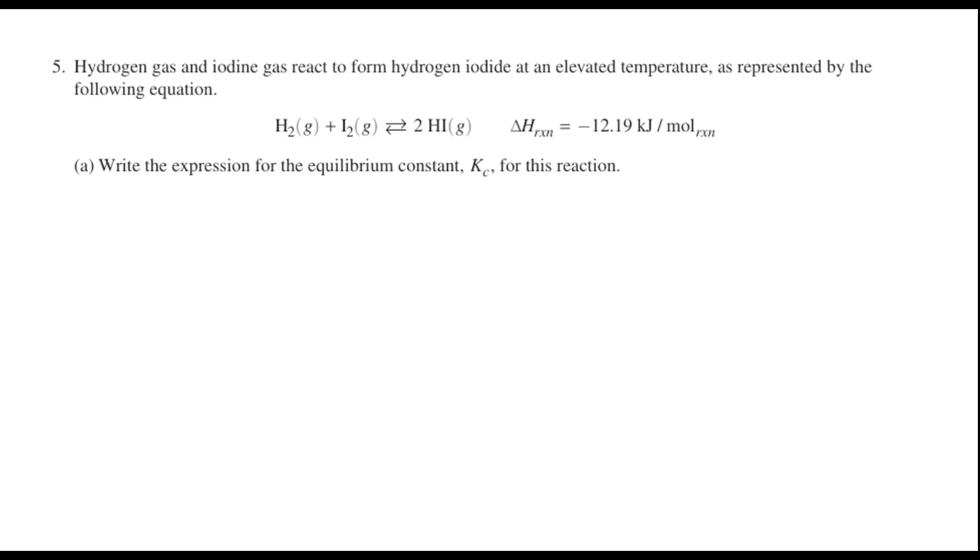Now, let's get started. Question five is one of the shorter free response questions. It's worth four points. And in this one, we have a case where hydrogen gas and iodine gas are reacting to form hydrogen iodide at an elevated temperature, as represented by the equation that we see here. And there's a delta H given for us as well.